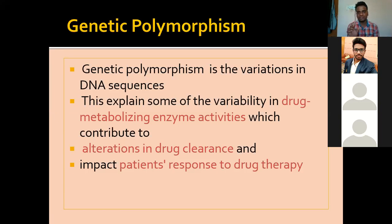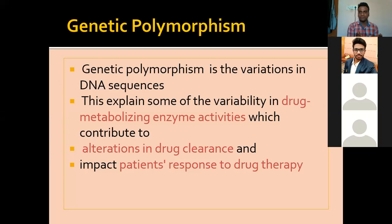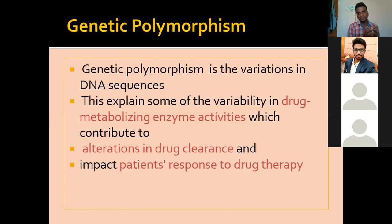Poly means many, and morphism refers to structure - the outer morphology. So when we talk about polymorphism, we are talking about many forms of the same thing. Here, the same thing is an enzyme, so we are talking about many forms of the same enzyme. We'll see why this happens, and then what effect these many forms of the same enzyme have on metabolism. Polymorphism is essentially a variation in DNA sequence.